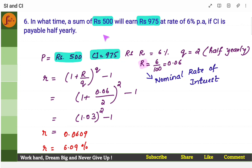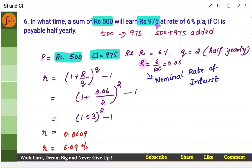Read the question carefully: it's not that 500 will become 975. Here, to 500, 975 will get added. In what time does a sum of rupees 500 earn rupees 975? That is, 975 will be added to 500 — how much time does it need for this 975 to be added to 500? So compound interest is 975.